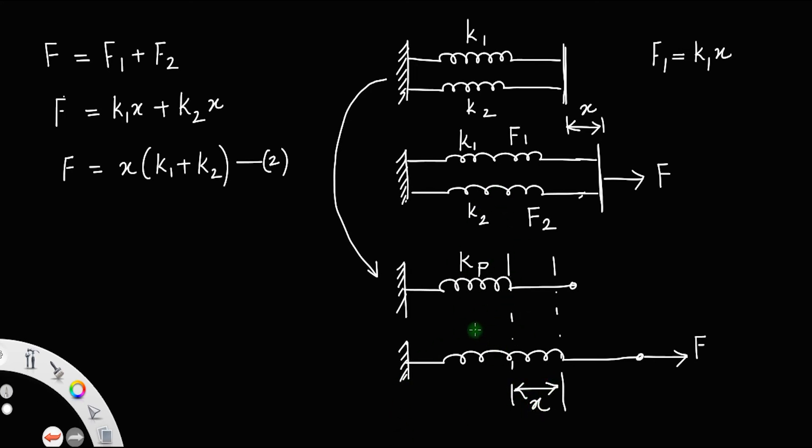So what you are basically doing is, you are basically removing these two springs and replacing it with another spring having same effect. Both this spring is extending it to an extension of x, here also you are doing the same. So here, when you apply the Hooke's law here, its spring constant is kp, we have Fp is equal to kp into extension x.